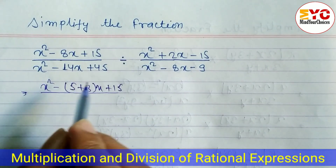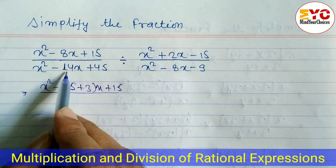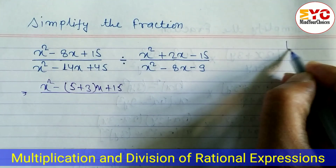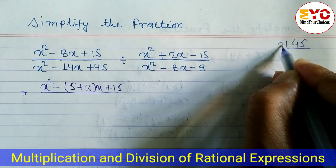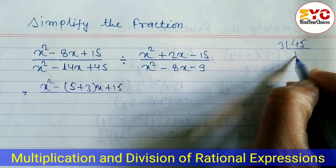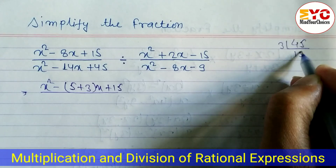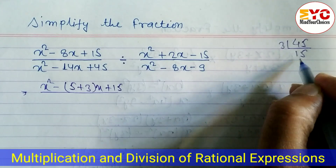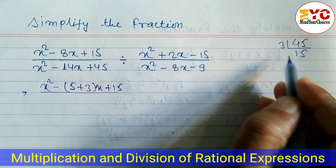Similarly in the denominator, while multiplying 45 and while adding 14. To find the factors, let's try: 45 divided by 3 gives 3 and 15. When you add these two we get 18, not 14, so that's not correct.